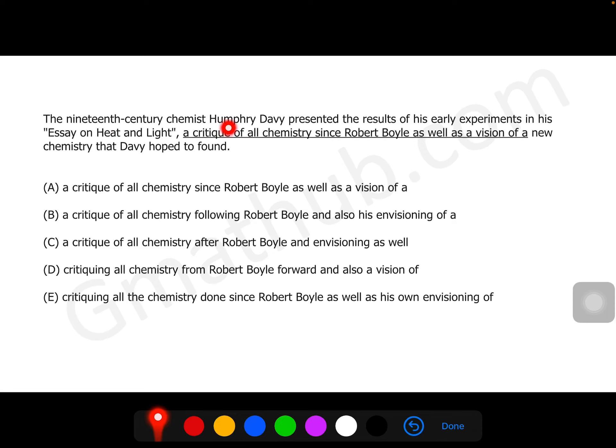The nineteenth century chemist Humphry Davy represented the results of his early experiments in his essay on heat and light, a critique of all chemistry since Robert Boyle as well as a vision of new chemistry that Davy hoped to found.